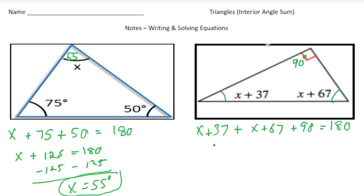And now when I simplify the left-hand side, let's see, x and x is 2x, and 37 and 67 is 104, plus 90, equals 180. And now I can combine the 104 and the 90, so it's going to be 2x plus 194 equals 180.